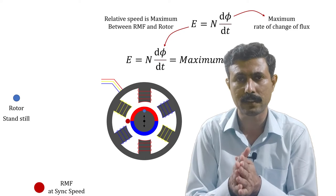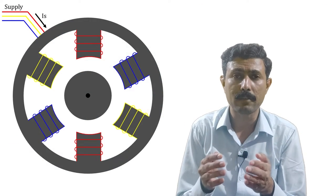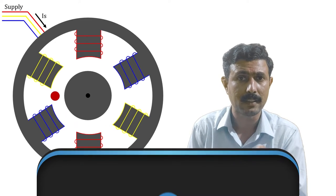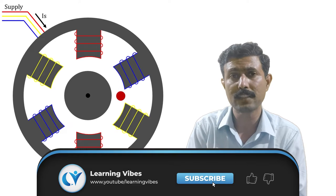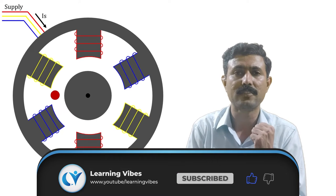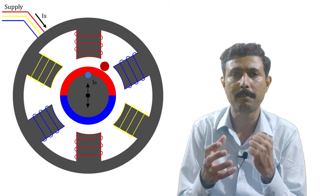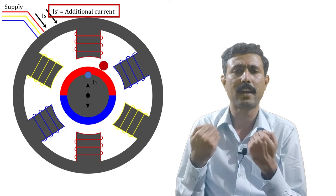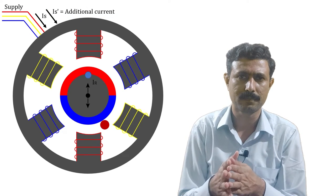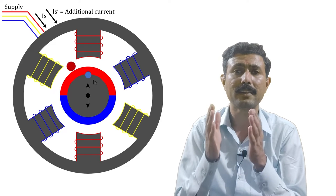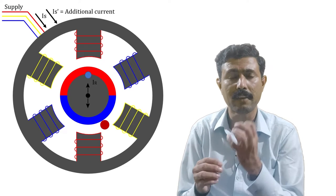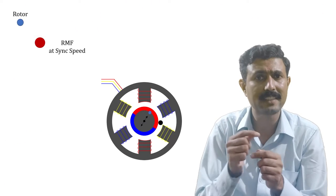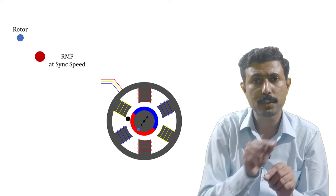When we get maximum induced EMF in the rotor, we get maximum current in the rotor. The rotor takes all its power from the stator. Initially the rotor is standstill and not drawing current, but as soon as we turn on the supply the rotor suddenly starts grabbing current. That extra burden is transferred to the stator, and hence the stator starts drawing more current from the system. This is the fundamental reason why an induction motor takes heavy current at starting.